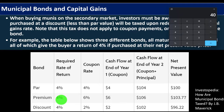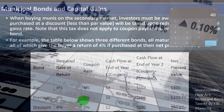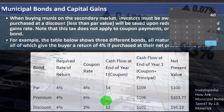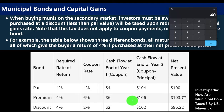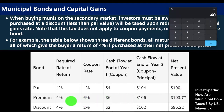For the premium bond, the market rate is four percent but the coupon rate is six percent — meaning the bond pays higher than the market rate. Since you can't adjust the interest rate down to four percent, you adjust the price upward to compensate. Cash flow at end of year one is six percent; at end of year two — coupon plus principal — it's 106 percent. Therefore the net present value is 103.77. We're pricing it above the face amount because it pays six percent versus the market's required four percent.